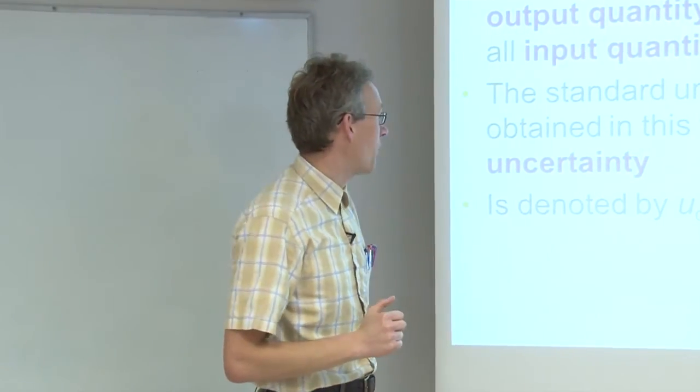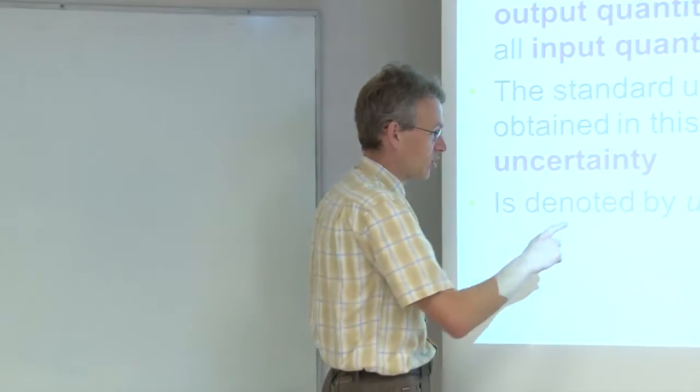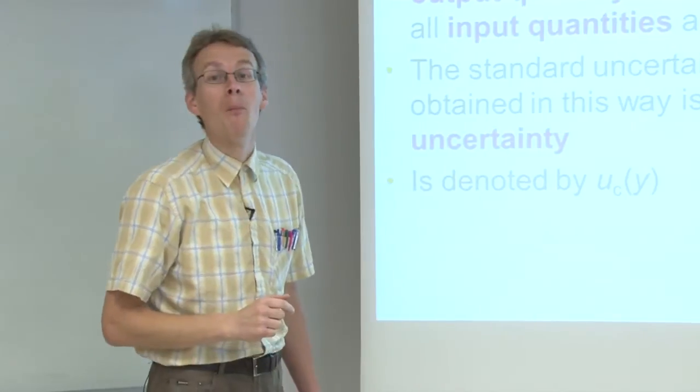Combined standard uncertainty, as we already saw in the previous lecture, is denoted by UC, whereby C means combined.